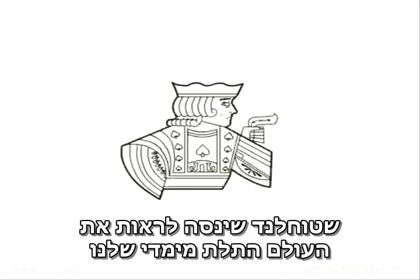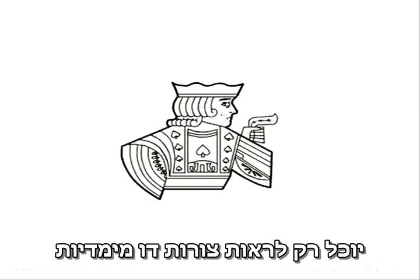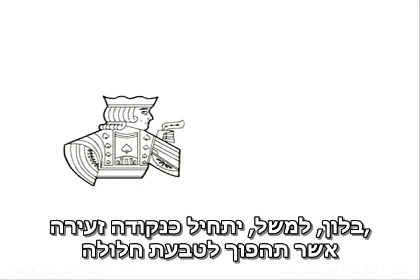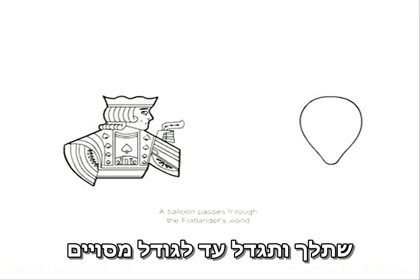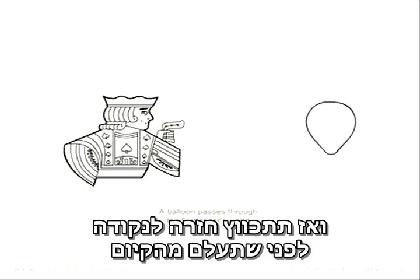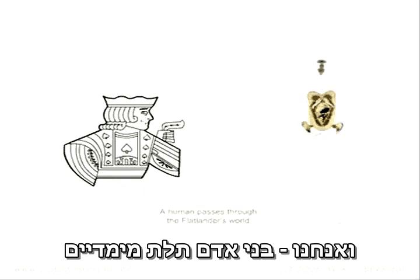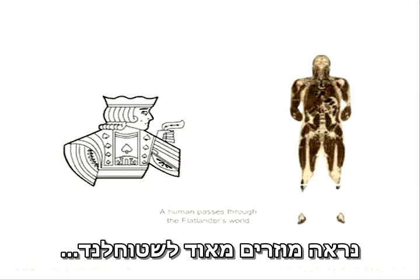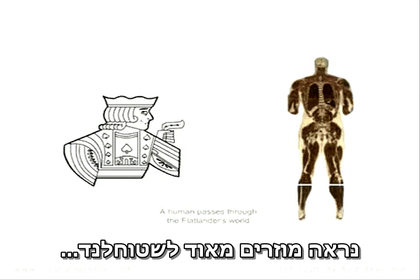And a flatlander, trying to view our three-dimensional world, would only be able to perceive shapes in two-dimensional cross sections. A balloon, for instance, would start as a tiny dot, become a hollow circle which inexplicably grows to a certain size, then shrinks back to a dot before popping out of existence. And we three-dimensional human beings would seem very strange indeed to a flatlander.